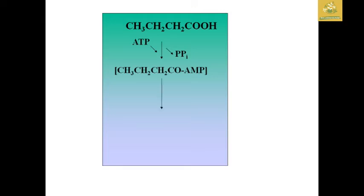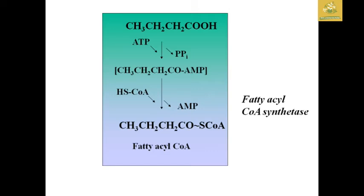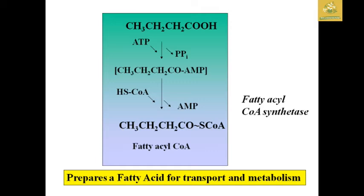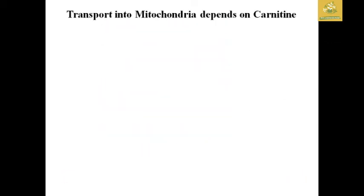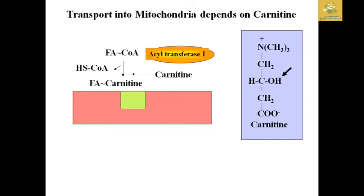Adenosine monophosphate combines with the acyl group, and in the presence of HS-CoA, adenosine monophosphate is reduced to produce fatty acyl-CoA. This total process is termed fatty acyl-CoA synthetase. While preparing a fatty acid for transport and metabolism, fatty acyl-CoA is the active compound, and its transport into mitochondria depends on carnitine, an important transport compound. Fatty acyl-CoA is activated by carnitine to form fatty acyl-carnitine, releasing HS-CoA.